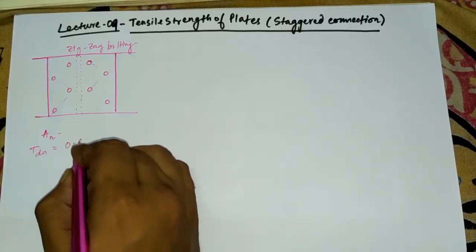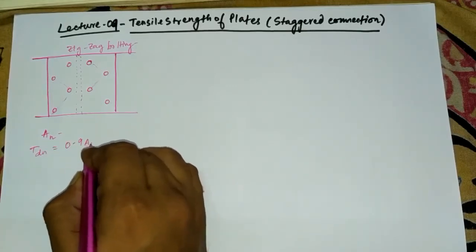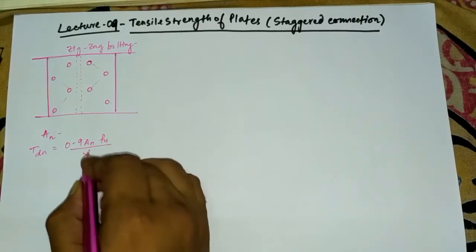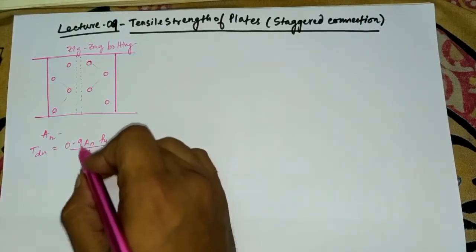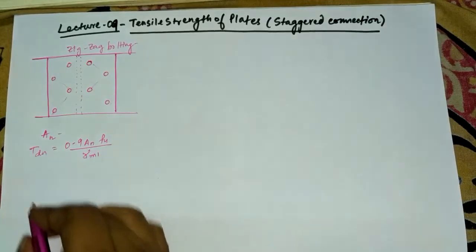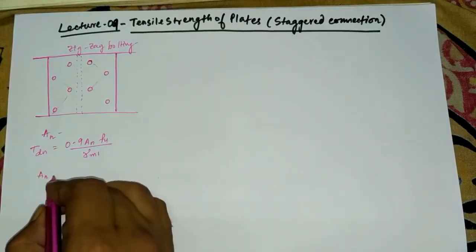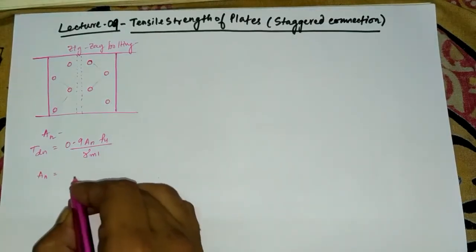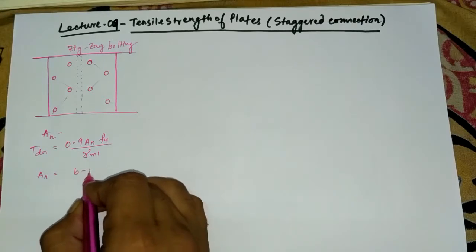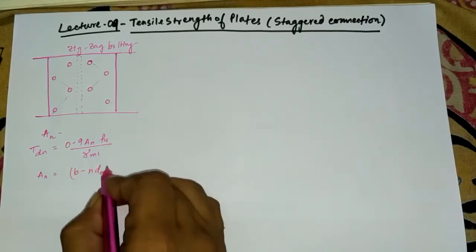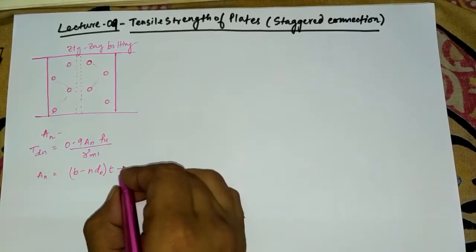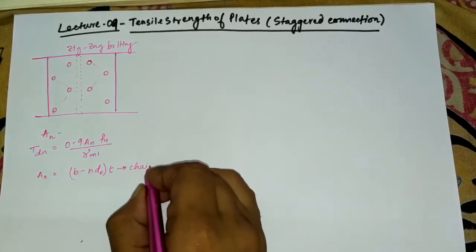The tensile strength formula uses net area: An = 0.9 × An × fu / γm1. Previously, for chain bolting, the net area was: An = (b − n × d0) × t.